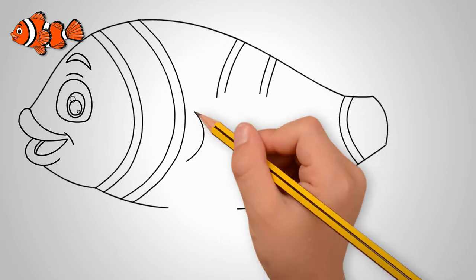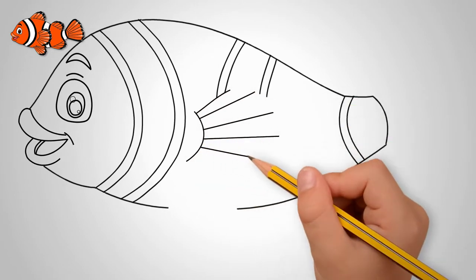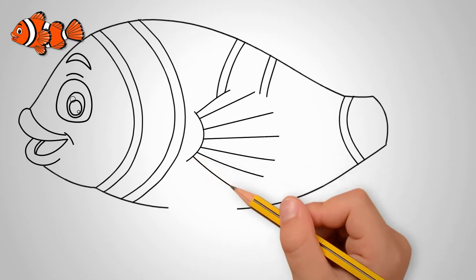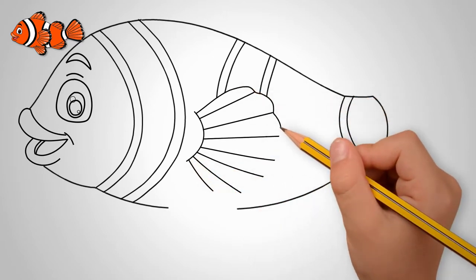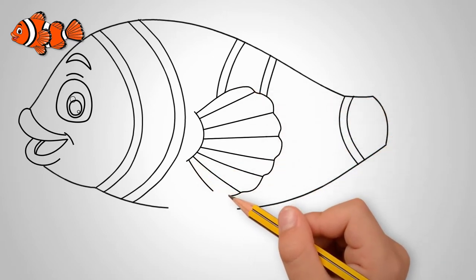In the back of the torso mark the contour of the tail. On the body we draw arcs, which are characteristic of clownfish. Draw two parallel arcs close to each other.